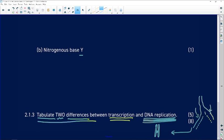So let's look at tabulating two differences between these two processes. And you'll see that it's out of five, which means you get two marks for each difference and one mark for tabulating correctly. And that is so simple. You don't have to know anything about life sciences. You just have to draw a table properly, and you've got your mark.